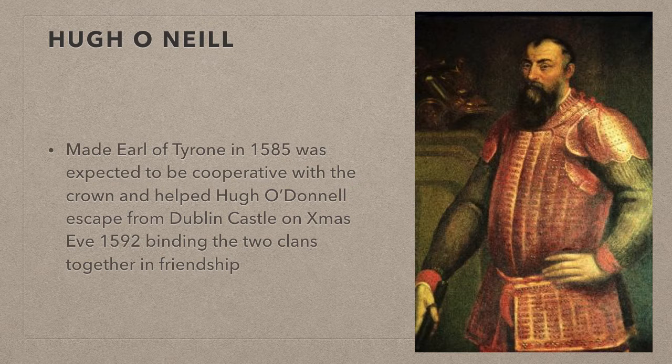However, Hugh O'Neill proved himself to be a very independent-minded person and he decided to plan the escape of Red Hugh O'Donnell on Christmas Eve of 1592. This was his attempt to bind the two most powerful clans in Ireland together after centuries of fighting. It wasn't long before this alliance was called into action.